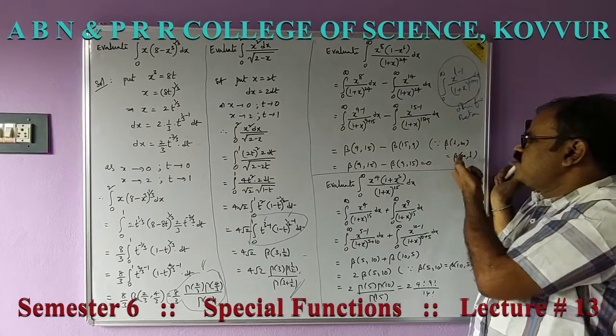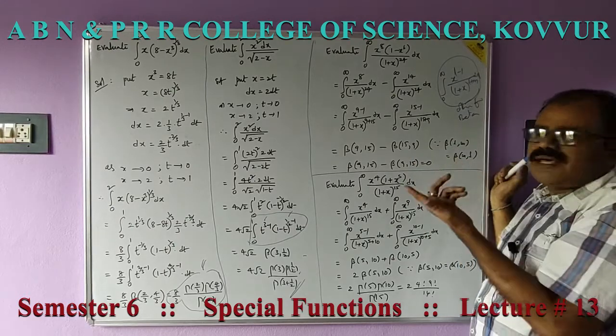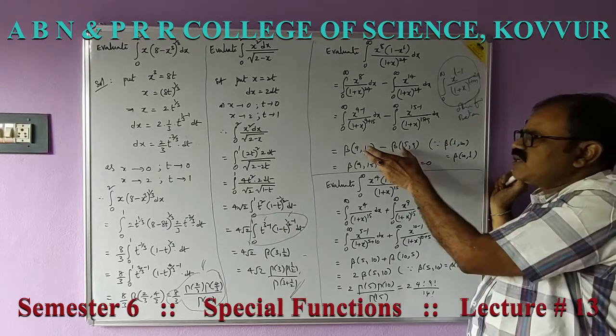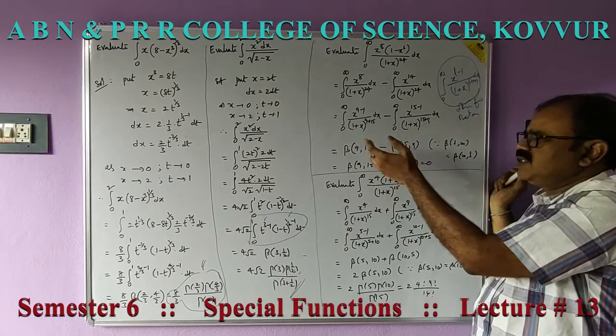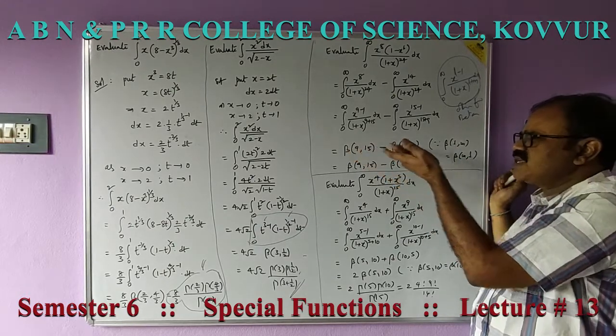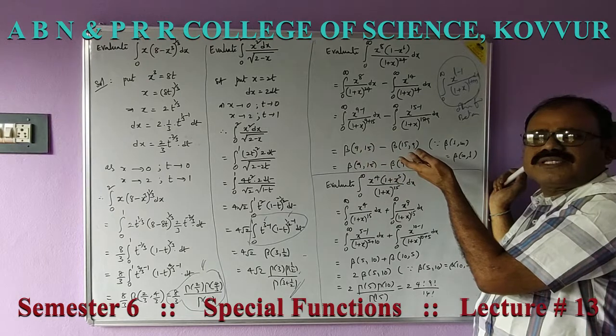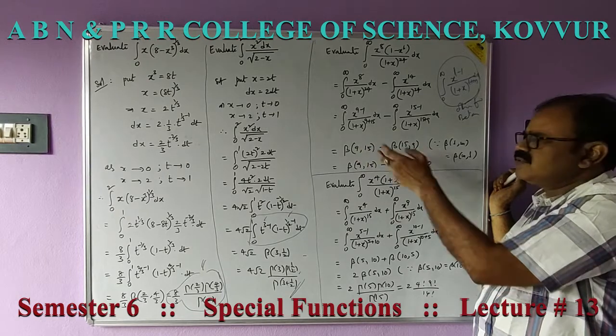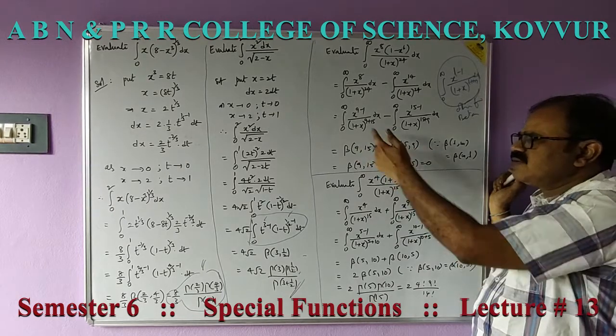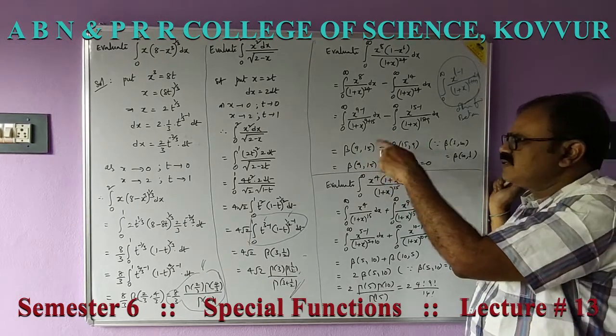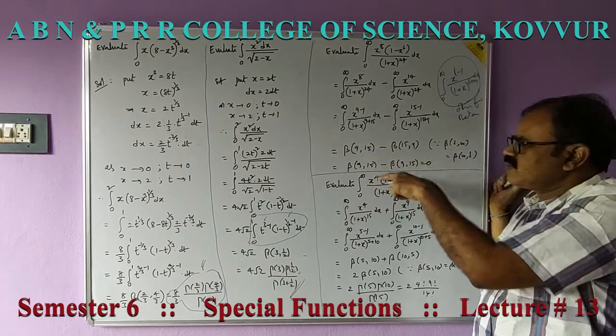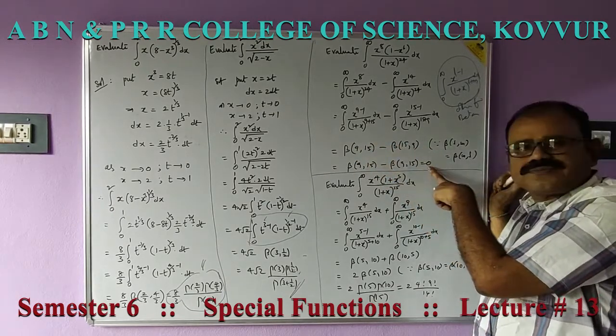Since beta(l,m) = beta(m,l), beta(9,15) equals beta(15,9). Therefore these two terms are equal and get cancelled. The total value is 0.